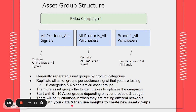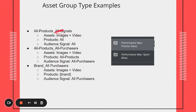I usually like to start with your first-party data — whether that's your email list, all converters data, and so on — but it all depends on how new your account is. For naming conventions: if you have all products and all signals, it would be image and video assets, all products, all signals. If you have all products and all purchasers, the signal would be all purchasers and then all products. And if you're testing a brand category with all purchasers, this would be a standard asset group — you make multiples of these depending on your categories.